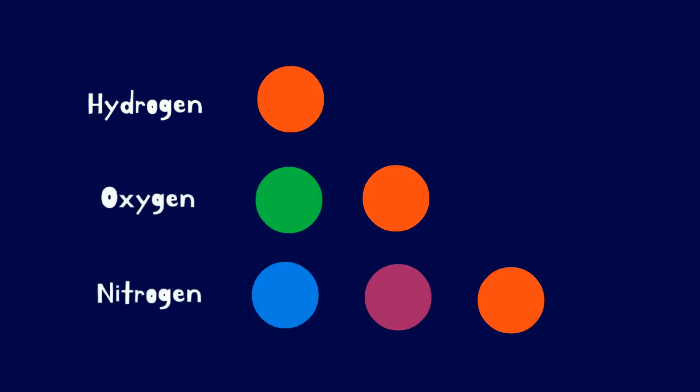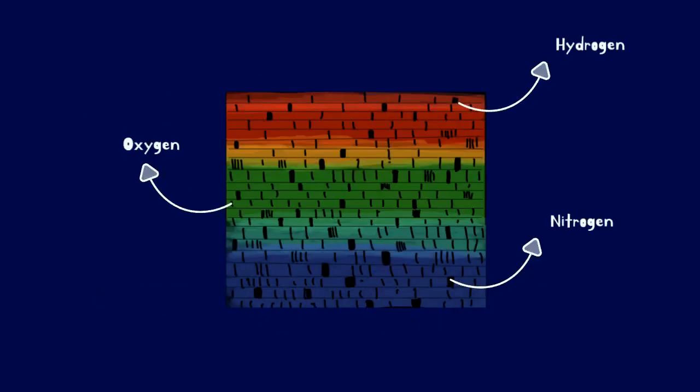That is why, between some colors, there is nothing because the atmosphere absorbs those particular wavelengths. And if we know which black lines represent which element, we will know what the atmosphere of the star is composed of.